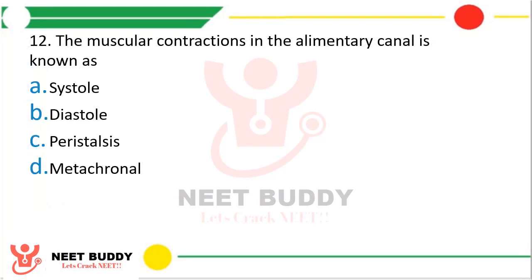Question number 12. The muscular contractions in the alimentary canal are known as: option A. Systole, option B. Diastole, option C. Peristalsis, or option D. Metachronal contractions. The correct answer is option C, peristalsis. The function of peristalsis is propulsion of food.